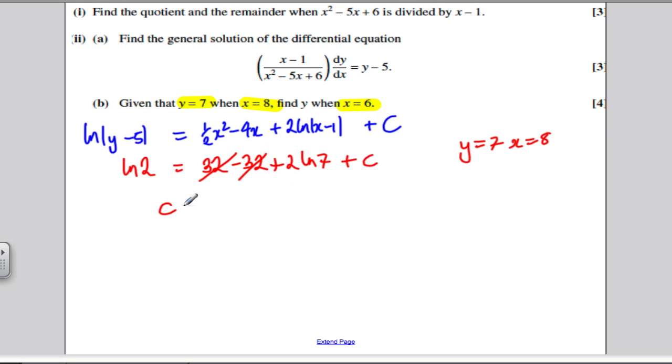And so I get that C is equal to ln 2 minus 2 ln 7. Taking that up on top of the ln, this is C is ln 2 minus ln 7 squared, which is 49. And using my powers of lns, ln A minus ln B is ln A over B. So this is ln 2 over 49.